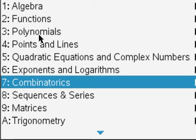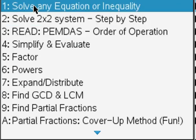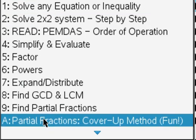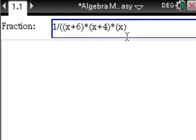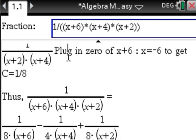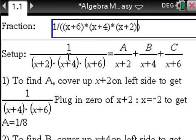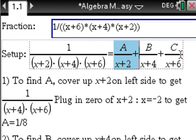Let's have some more fun with the cover-up method using three linear factors on the bottom. Like this example shows. x plus 2. Let's scroll up. Here is our decomposition. And we are supposed to find a, b, and c.